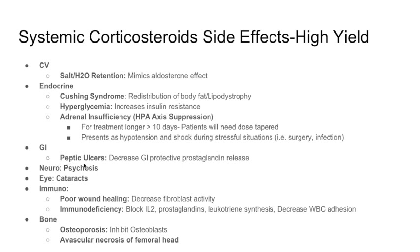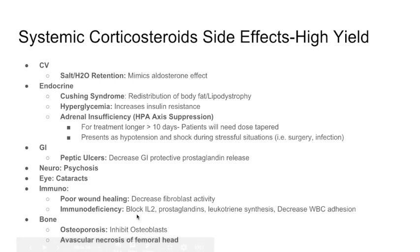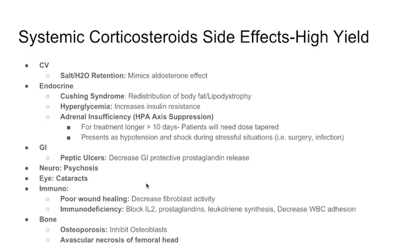Other systemic corticosteroid side effects: GI — peptic ulcers, because steroids decrease GI-protective prostaglandin release. Neurological — psychosis. Eye — cataracts. Immune — poor wound healing because they decrease fibroblast activity, and immunodeficiency because they block prostaglandins, leukotrienes, IL-2, and decrease white blood cell adhesion. Bone — osteoporosis because they inhibit osteoblasts, and avascular necrosis of the femoral head, which is rare but a feared complication. Please review these side effects — they are very high yield.